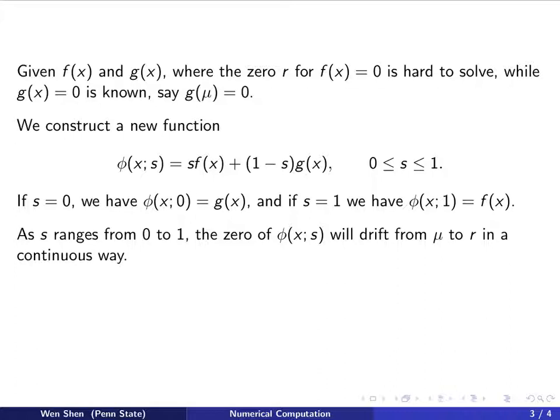As s ranges from 0 to 1, the zeros of this function phi will drift from mu, when s is 0, to r, when s is 1, in a continuous way.